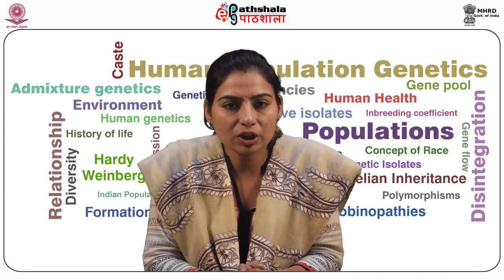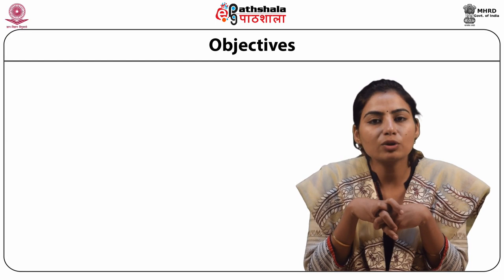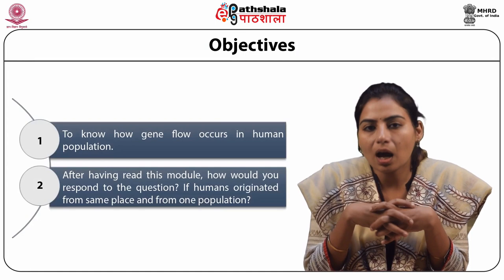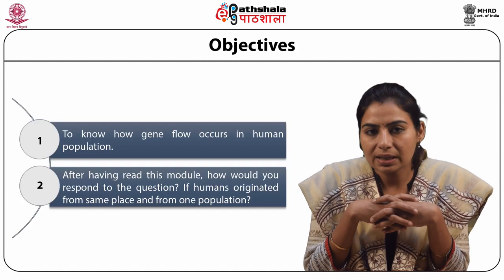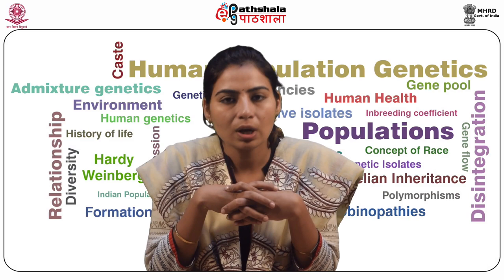Today we are going to discuss about the module which consists of gene flow and mixture genetics. This module comes in the paper of human population genetics. In this module, we will be covering in detail about gene flow and its consequences on the population, the various models of gene flow, and some examples of gene flow which have existed in human populations. So let's begin.